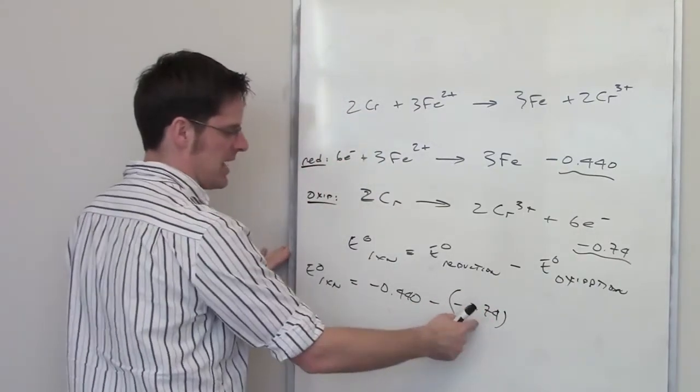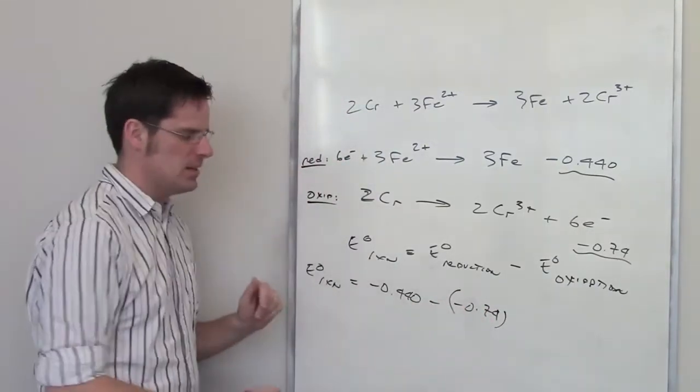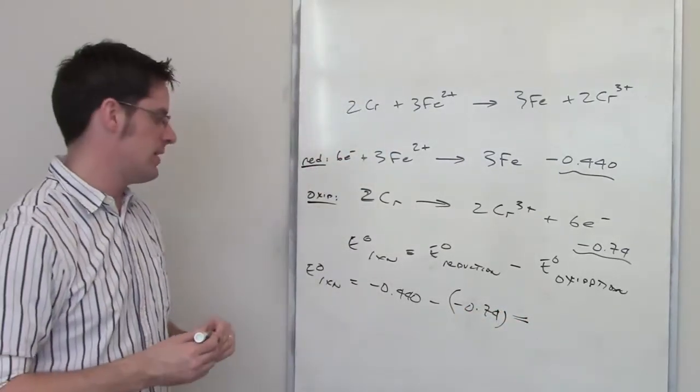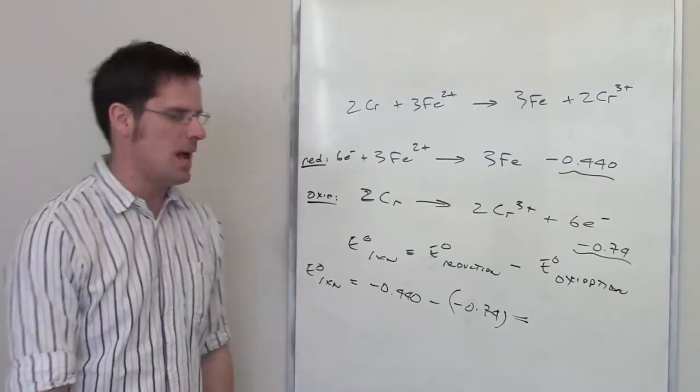So I'm taking this and subtracting from it a negative number, which is the same thing as adding it. You do that in your calculator and get the final answer. And whatever that final answer is, well, it happens to be right.